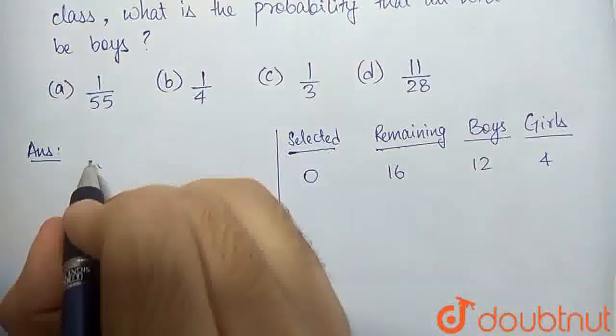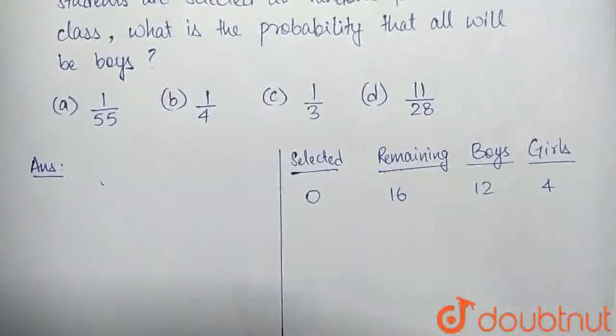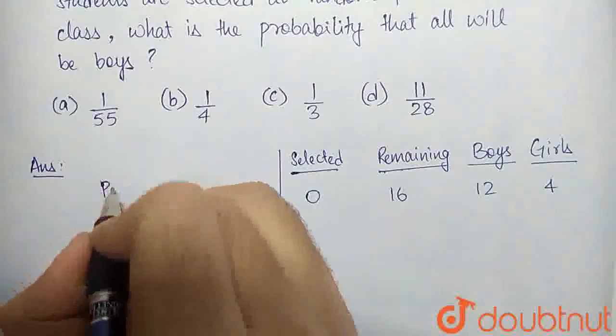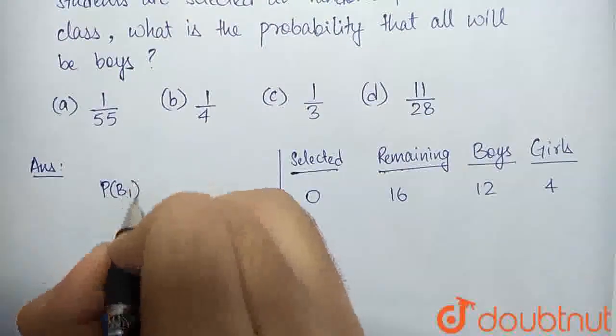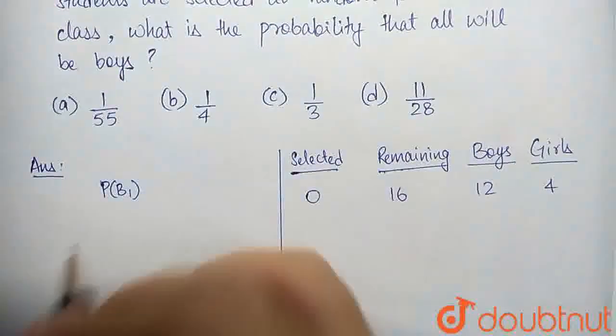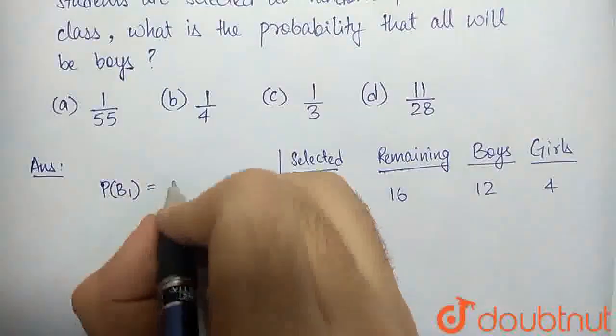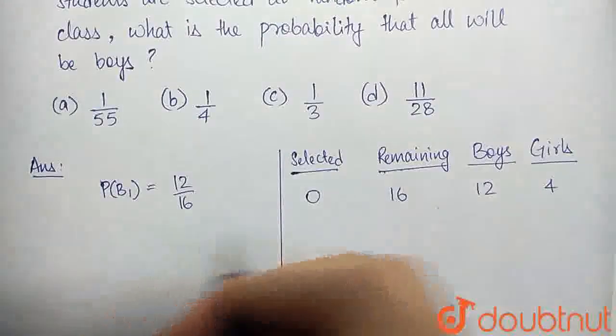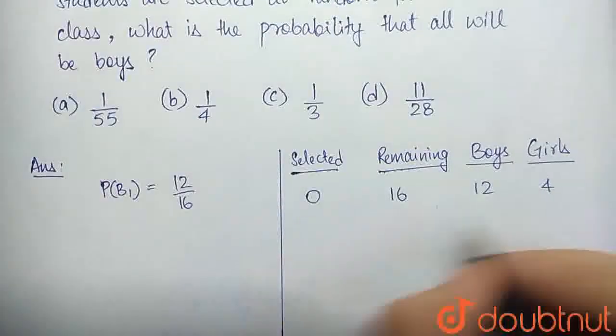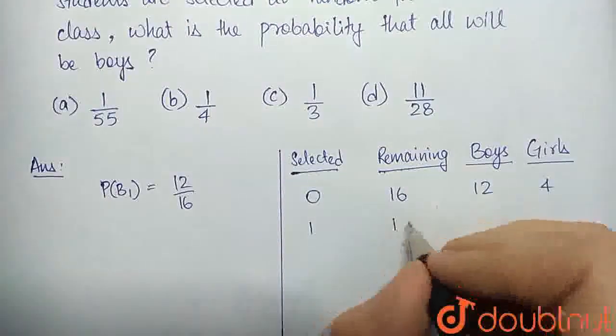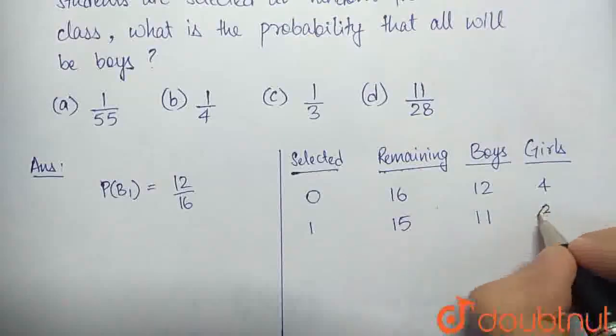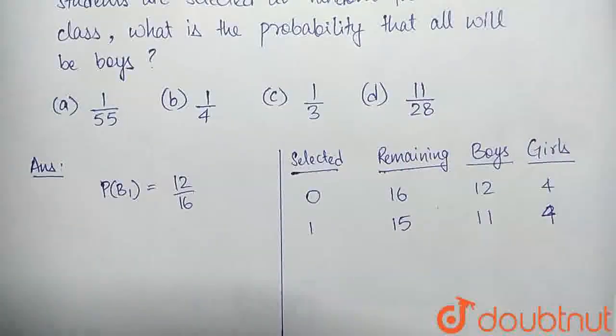Now, for the first selection, we are required to find out the probability that all of them will be boys. So, the first time we have to pick a boy, the probability of selecting a boy the first time is 12 by 16. 12 boys out of a total of 16 students. Now, I will be updating these: we have selected 1 student, there are 15 students remaining, of which 11 are boys and 4 are girls.